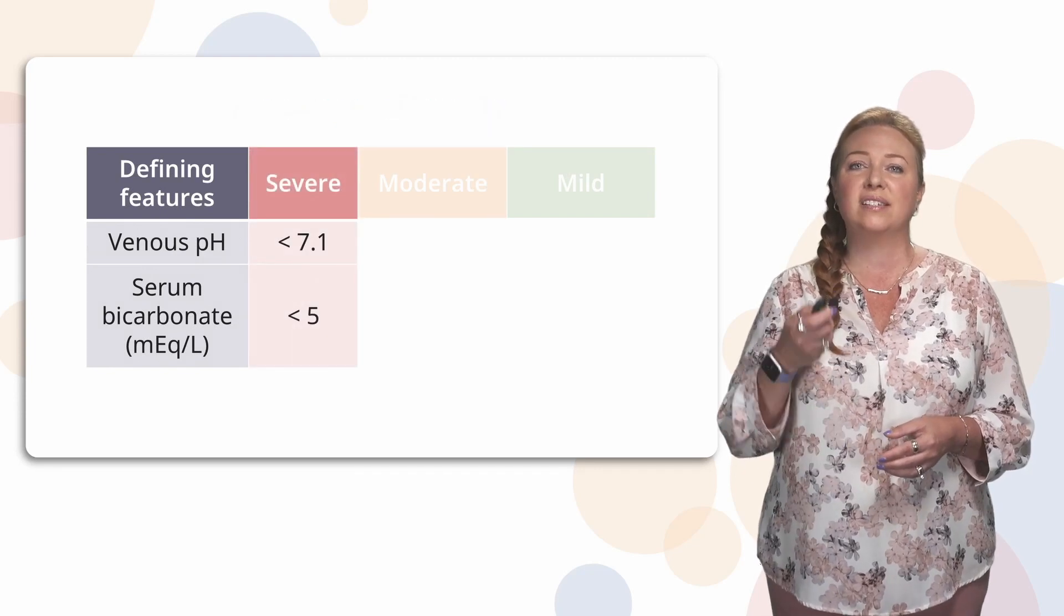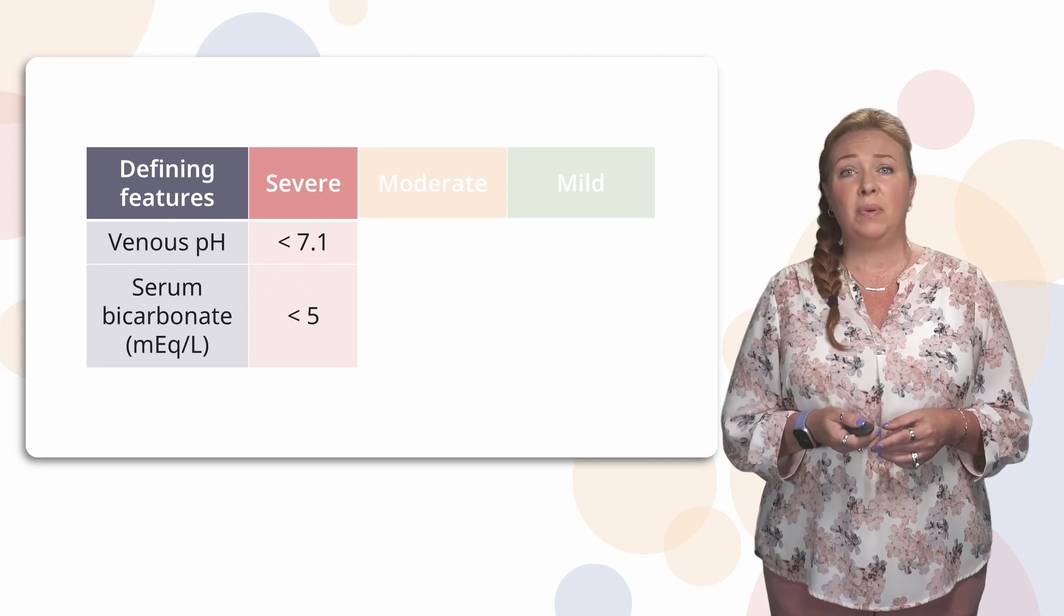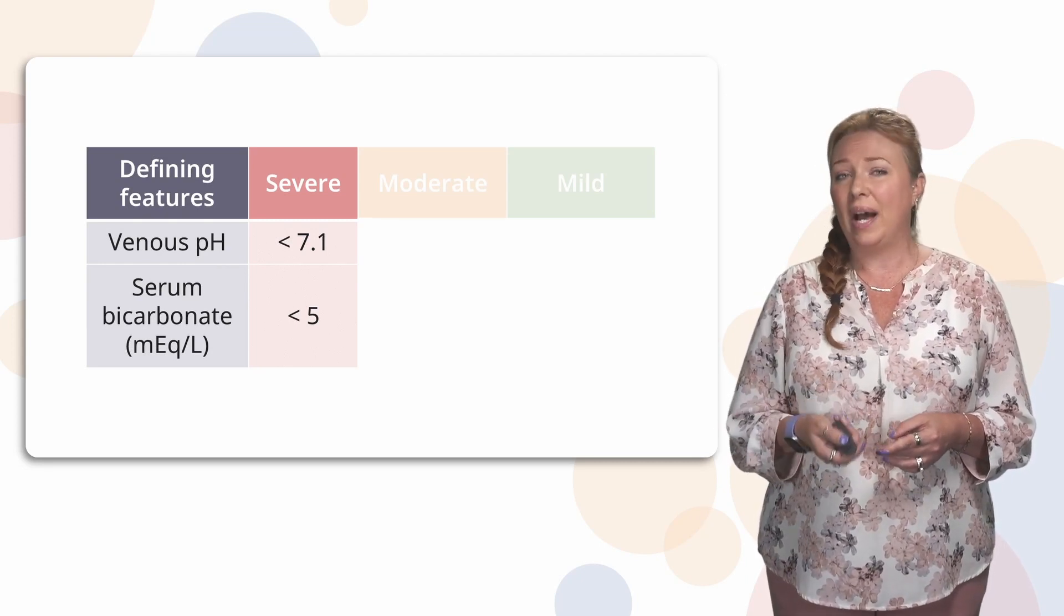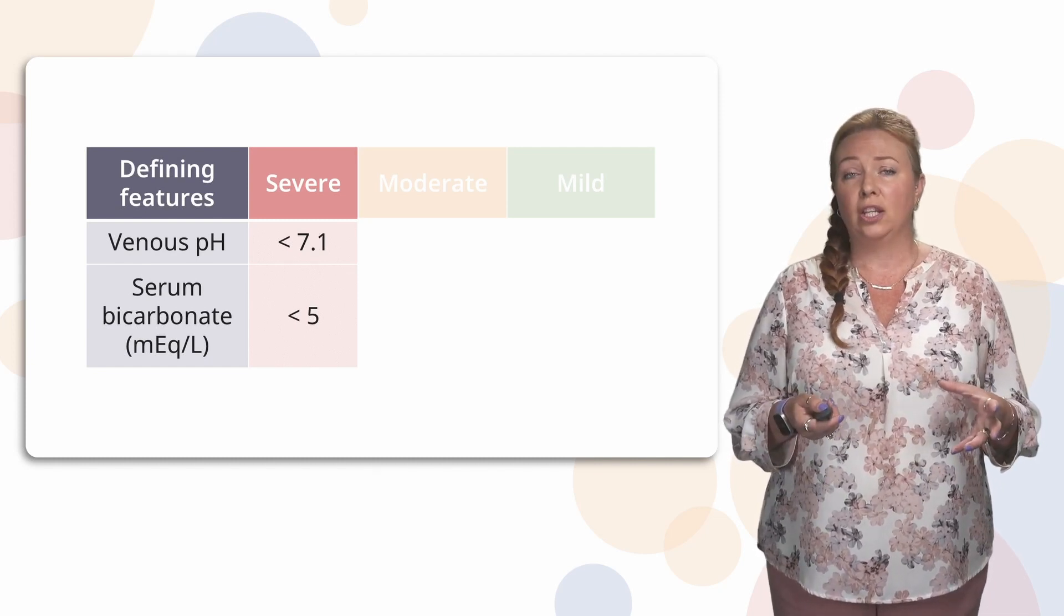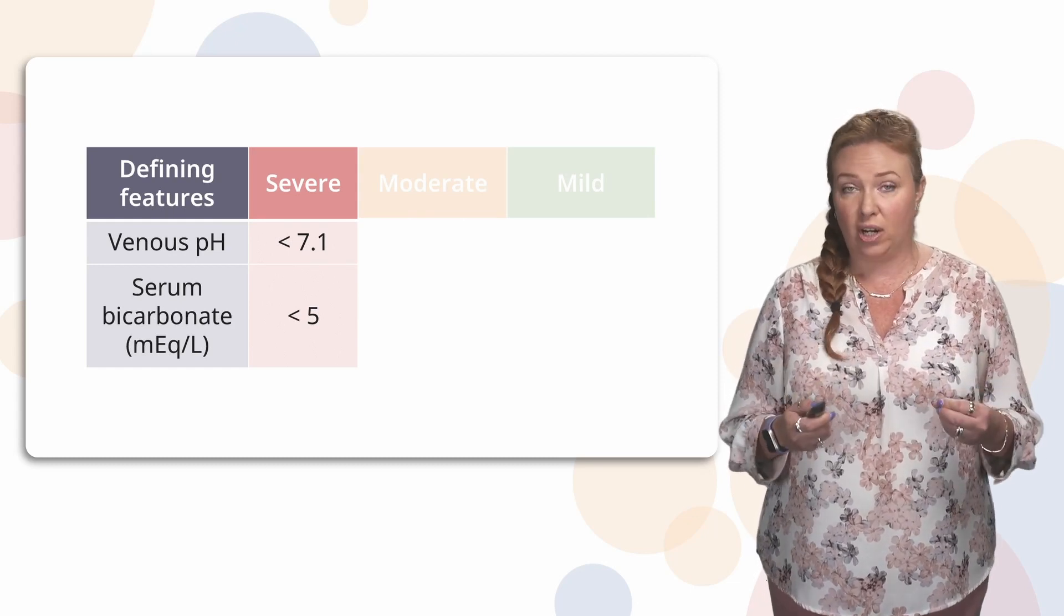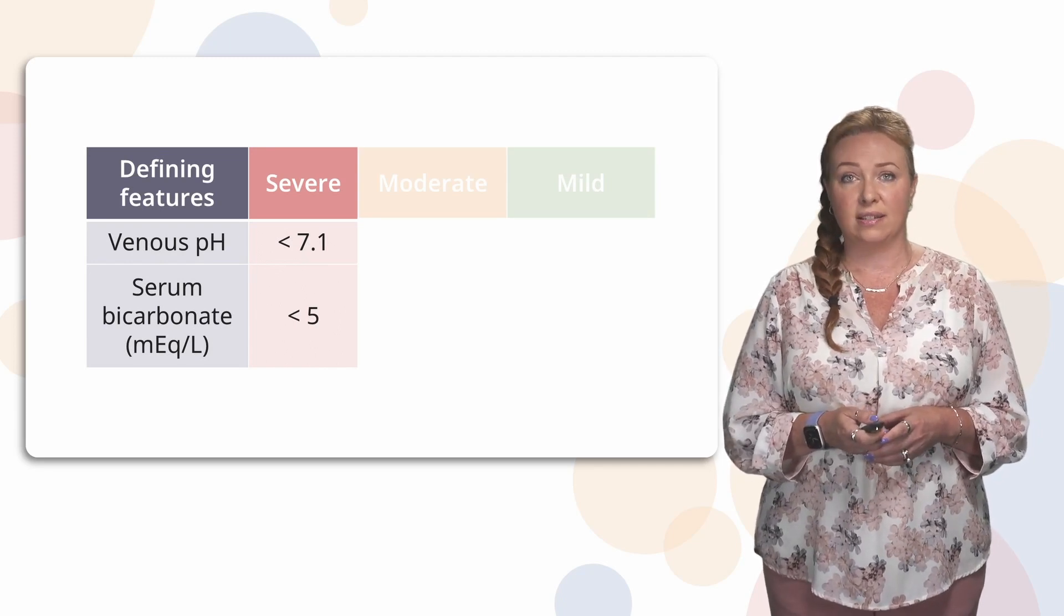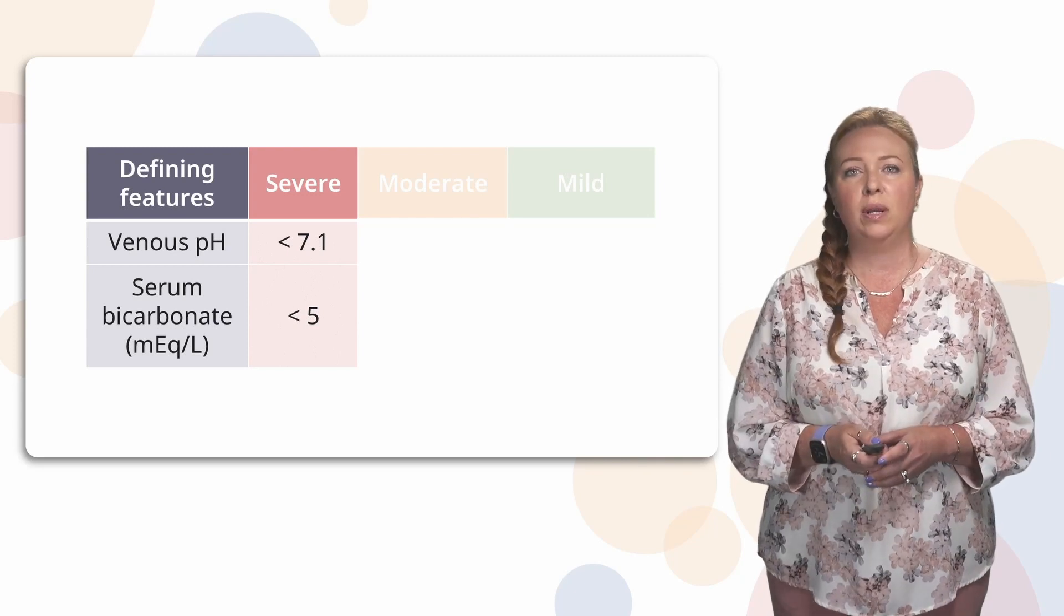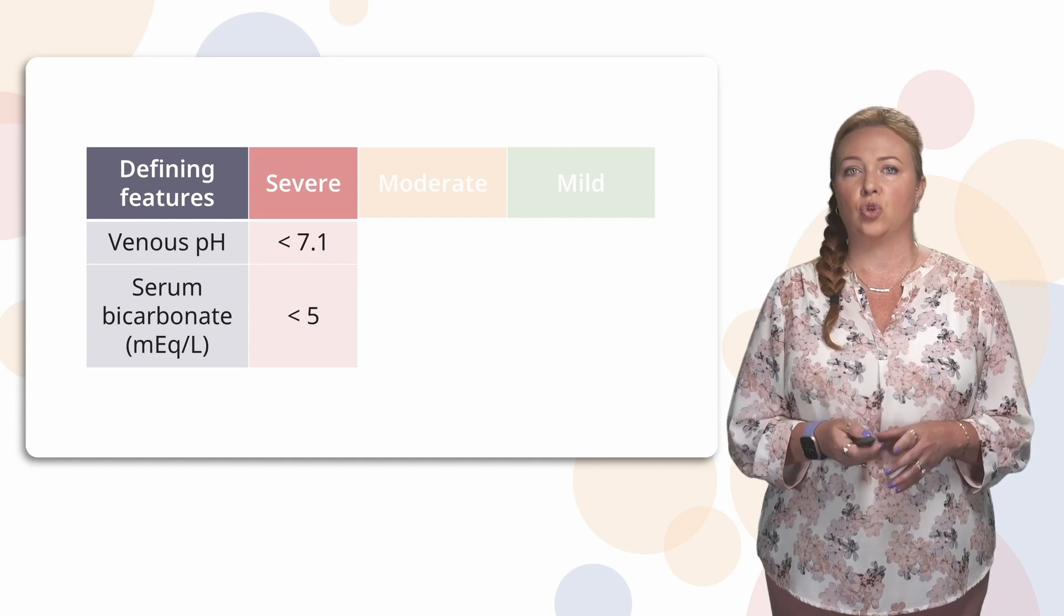So for a severe case of DKA, you're going to see a pH that's less than 7.1 and your bicarb might be less than 5. Now that's pretty low and in many cases this is going to cause people to get very excited about the degree of acidosis that this patient is exhibiting. Usually patients are still walking and talking at this point, but this level of acidosis really means you're getting into trouble.